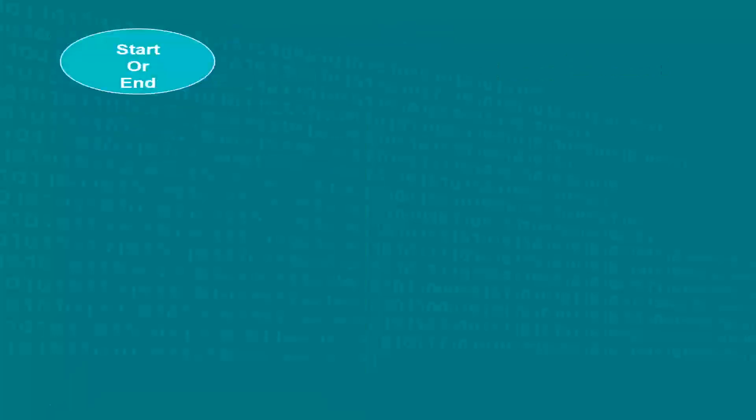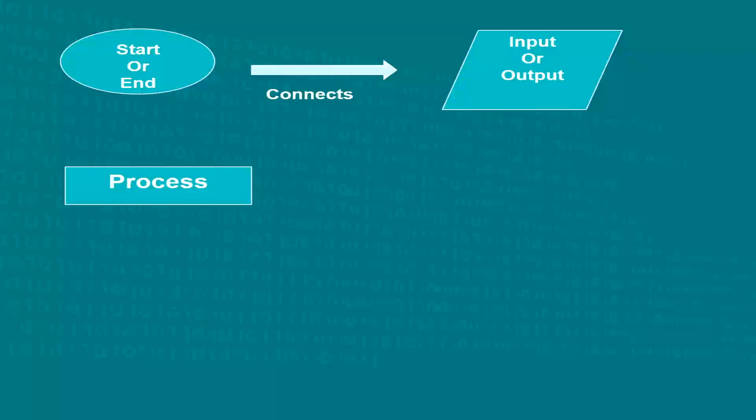The oval shape represents a start or end point of an action or a process. The arrows act as a connector and they show the relationship between the representative shapes. A parallelogram represents the input or an output. A rectangle represents a process.